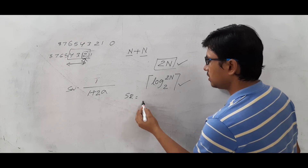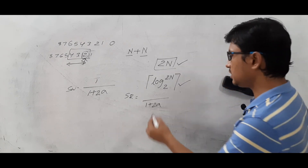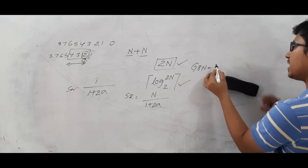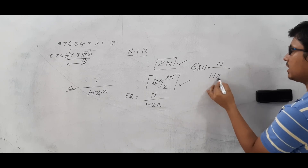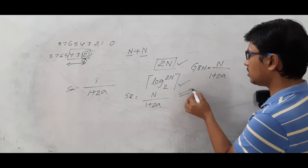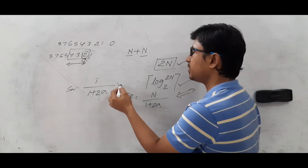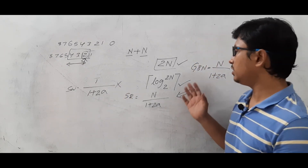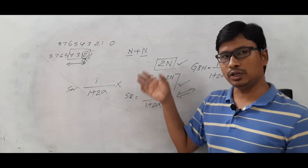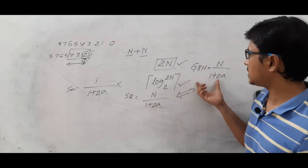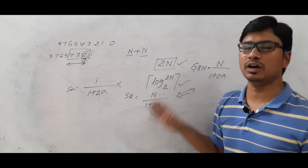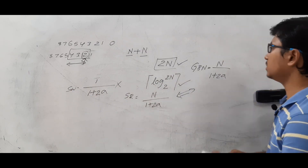The efficiency of Selective Repeat is n divided by (1 + 2a), where n is the window size — the same formula as Go-Back-N. Stop-and-Wait efficiency is 1/(1 + 2a), which is lower. So the efficiency of Go-Back-N and Selective Repeat is the same. However, Selective Repeat is more complex to implement — the receiver needs sorting, and tracking unacknowledged frames is harder — whereas Go-Back-N is simpler. That is why in real-time systems we prefer Go-Back-N.